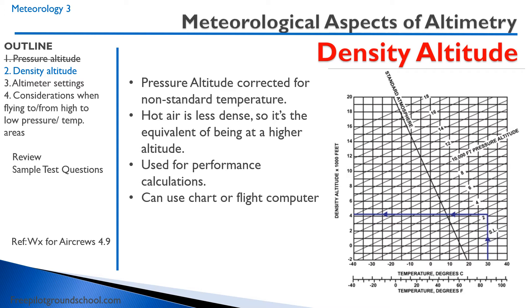You can figure out the density altitude using your flight computer — we'll get into that in navigation — or by looking at a Cox chart, which is right here. For example, if the pressure altitude is 2,000 feet and it's 30 degrees Celsius out, we start at 30 on the bottom, move up to the diagonal line at 2,000 feet, and read across to about 4,000 feet. So with such a hot temperature, it's the equivalent of being at 4,000 feet — the plane will perform as if it were at 4,000 feet under standard conditions.